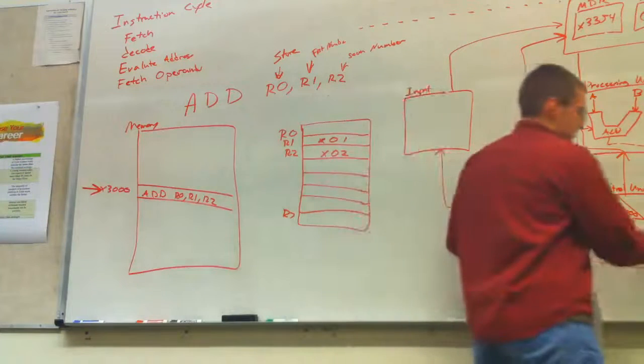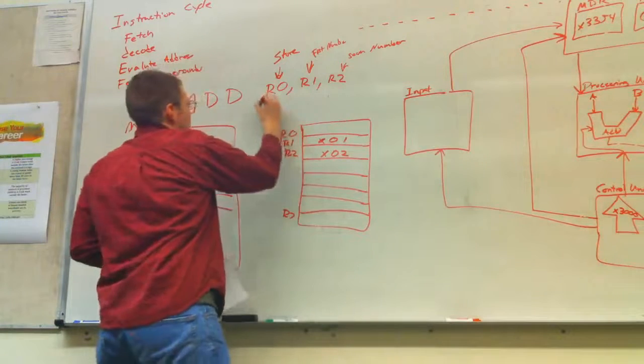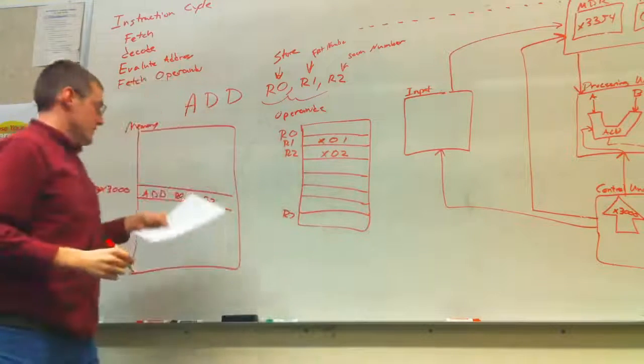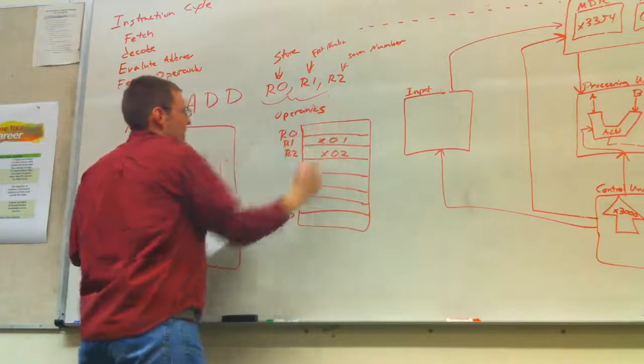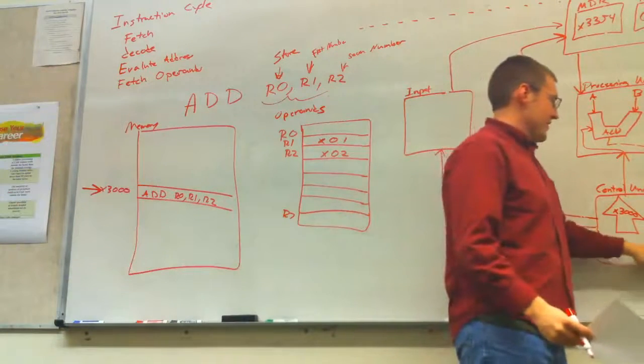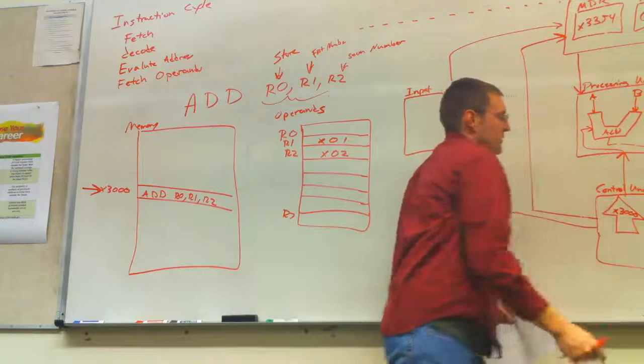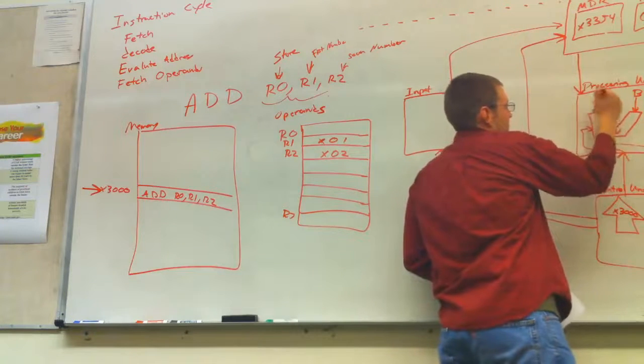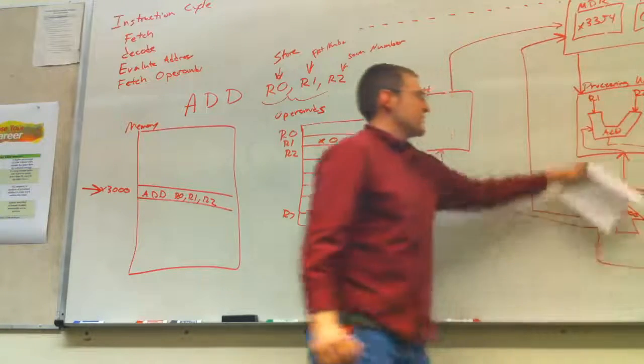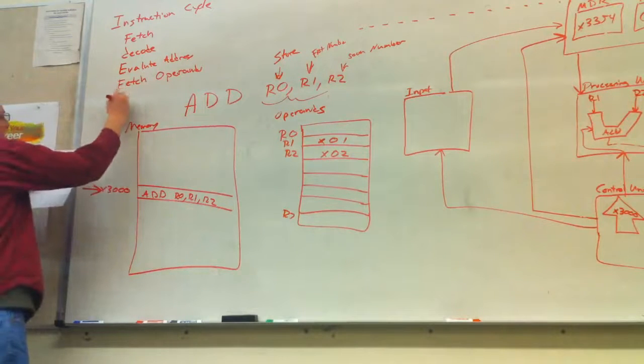So, once that's done, it does fetch operands. So, basically, these are known as our operands. So, it's going to fetch these. So, basically, it's here, so that way they're ready to use. So, we want to add R1 to R2. So, it's going to send these off to here. So, this is R1. Now, this is going to be R2. So, the data has been sent to the processing unit. So, then, now we can execute.